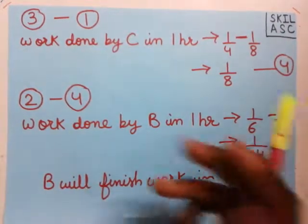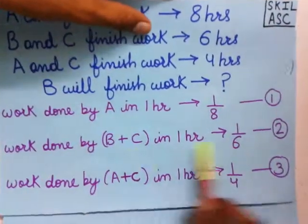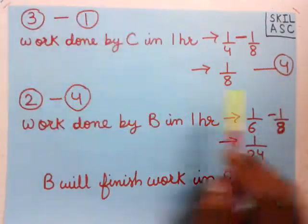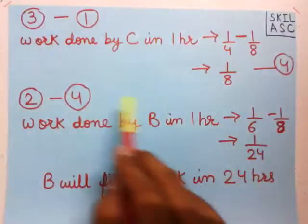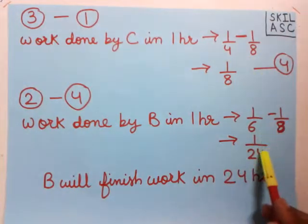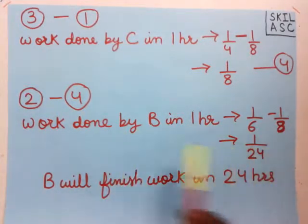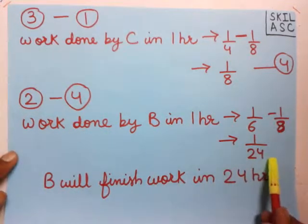Next, we subtract this fourth statement from statement 2. We do (B + C) minus C, which gives us B. On the other side, 1/6 minus 1/8 gives us 1/24. So work done by B in one hour is 1/24.